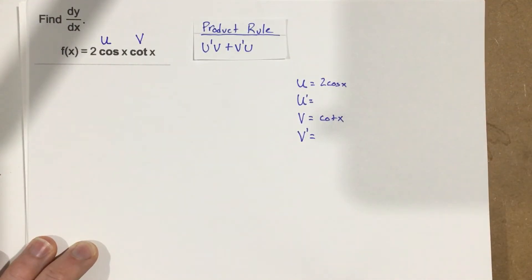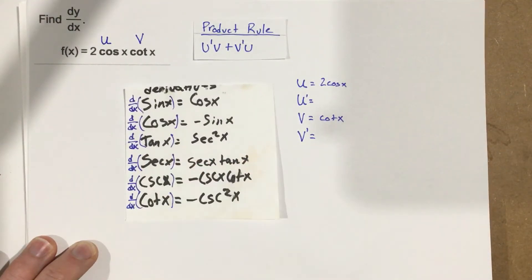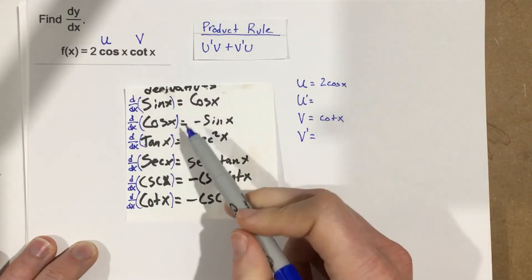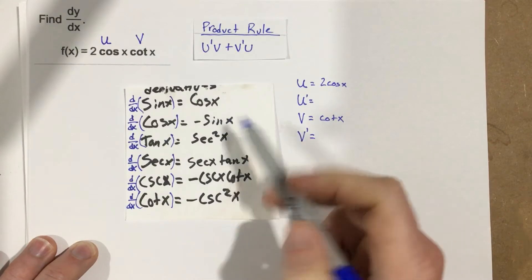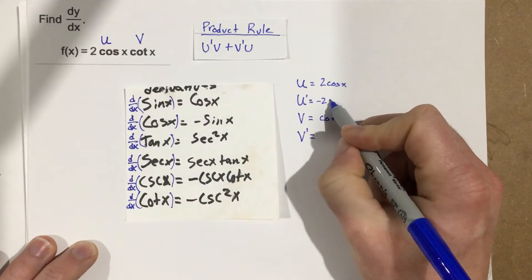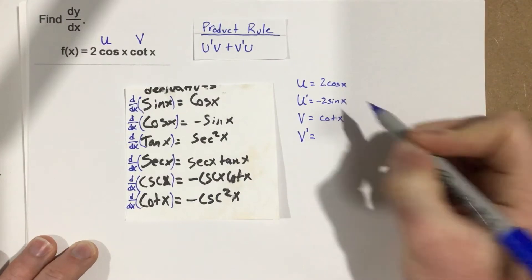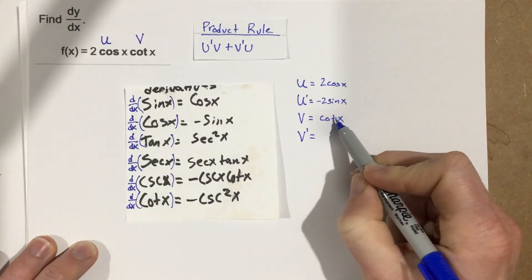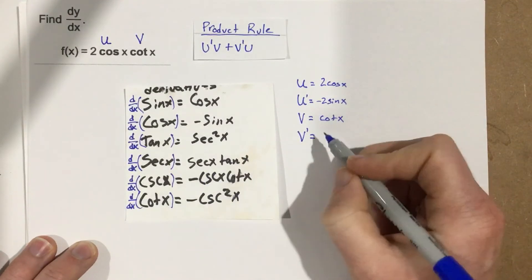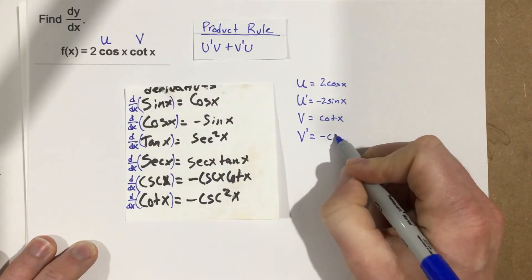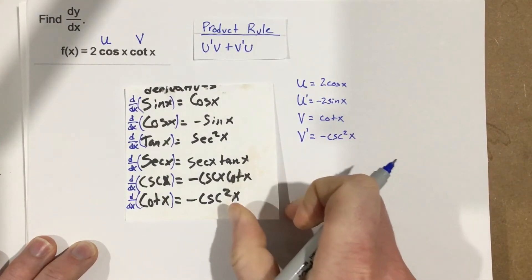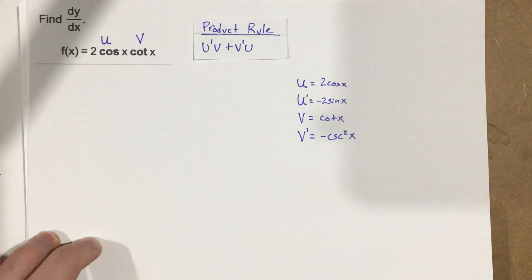Now I need to take the derivatives of these functions. The derivative of cosine x is negative sine x, so when I take the derivative of 2 cosine x, I get negative 2 sine x. Then I take the derivative of cotangent x, and the derivative of cotangent x is negative cosecant squared x, so I write negative cosecant squared x here for v prime.